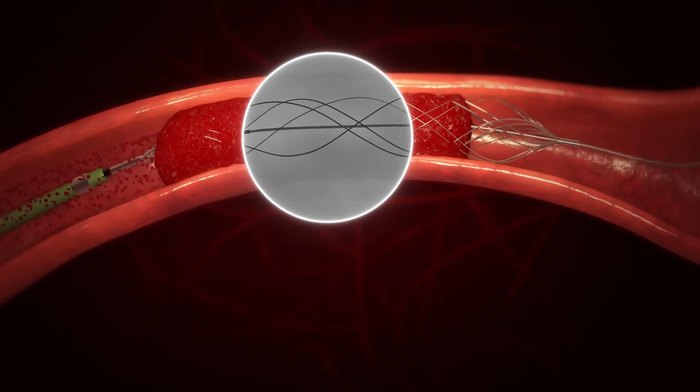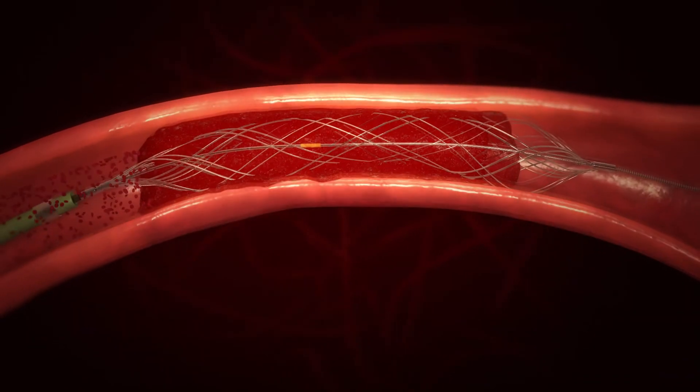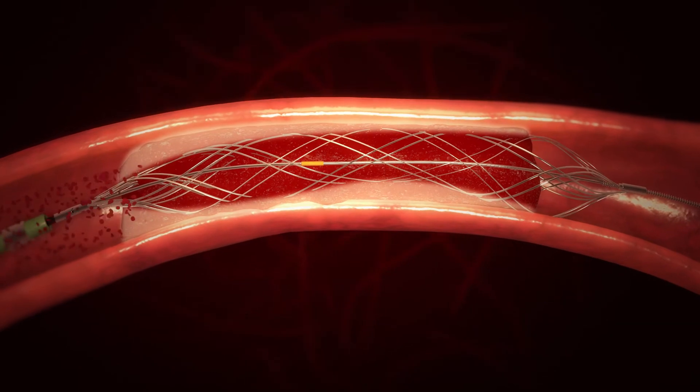The clot is contained using three complementary methods. The radial force creates friction between the clot and the braided net.